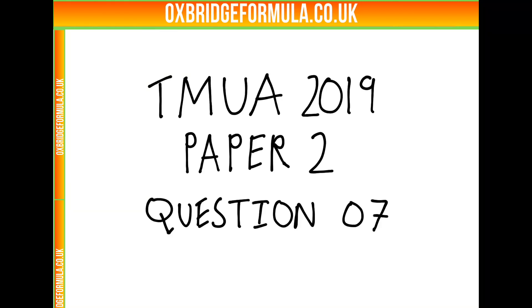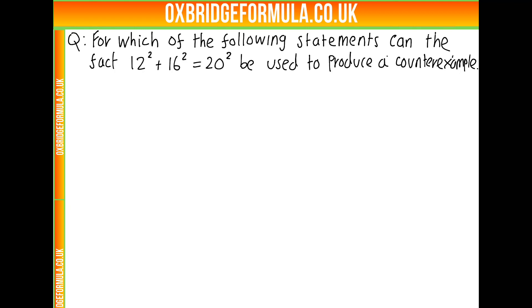This is the solution video for question 7 from paper 2 of the 2019 TMUA or CTMUA exam. In this question, we're given the fact that 12 squared plus 16 squared is 20 squared, and we're going to be given a list of statements. We're asked for which of these statements can this fact be used to produce a counterexample.